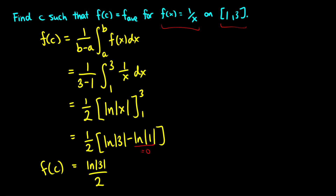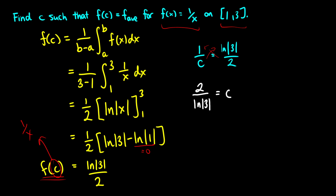To find c, we plug c back into the original function 1 over x. So we need 1 over c to equal ln 3 over 2. Multiplying everything by c and by 2, then dividing by ln 3, we get c equals 2 over ln 3. That is our value — the point c where f of c equals the average. The average is ln 3 over 2, so we plug c into the original function and algebraic manipulation gives us c equals 2 over ln 3.